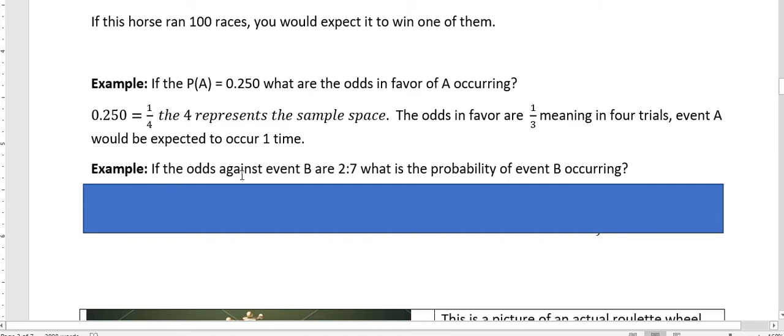If the odds against event B are 2 to 7, what's the probability of B occurring? Okay. Odds against say unfavorable to favorable. So the odds against are 2 to 7, which means unfavorable 2 times and favorable 7 times. So it's pretty likely that B will happen, right? So we have a pretty good probability. What we want to do is say, well, what would the sample space be?